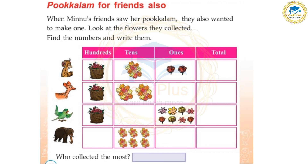Monkey collected flowers: 100 plus 10 plus 2 equals 112. Then Deer collected flowers: 100 plus 20 equals 120. Parrot collected flowers: 100 plus 8 equals 108. Then Elephant collected flowers: 60. Who collected the most flowers?